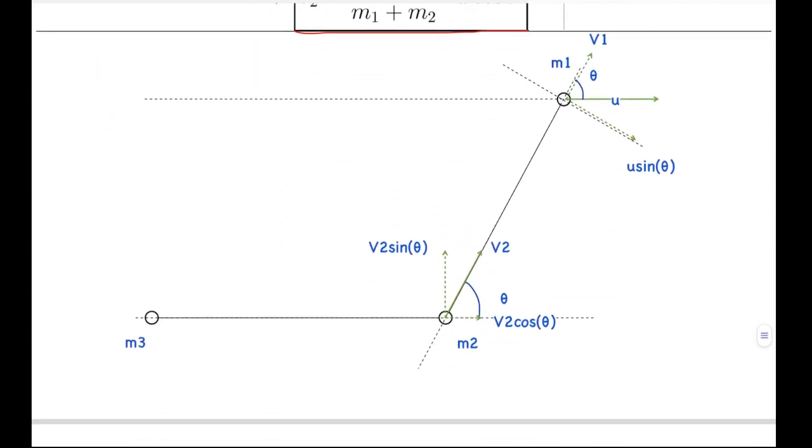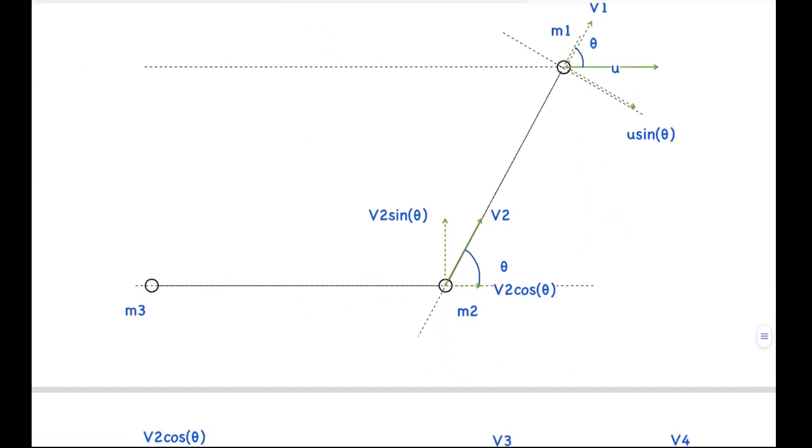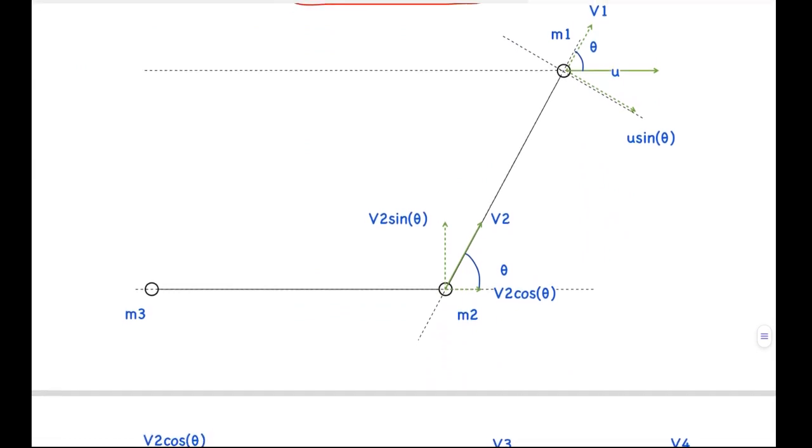After this, let's consider collision 2 or the second interaction which we are modeling as a collision. After the first collision, the first ball will be moving with a velocity v1 along the string and its perpendicular velocity won't have changed. The second ball will be moving with v2 along the string. Now looking at the components of v2 along this second string will be v2 cos theta, and perpendicular to that will be v2 sin theta.